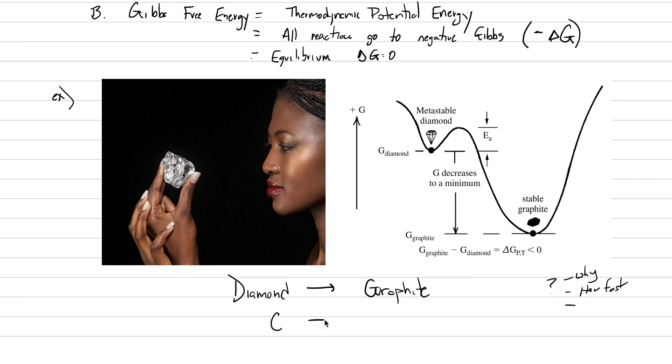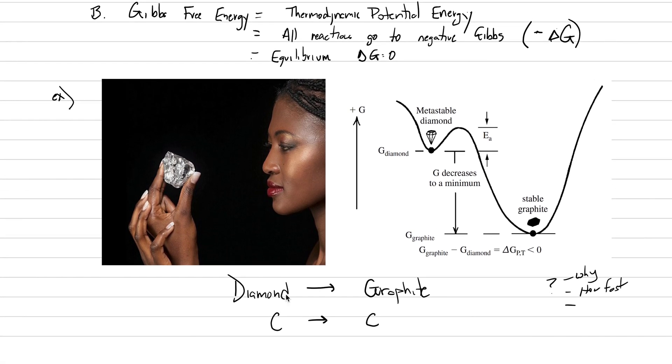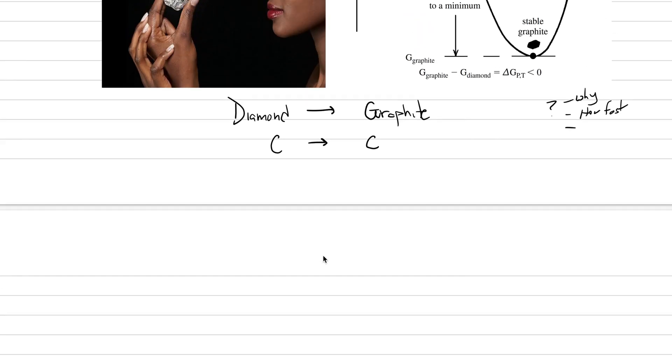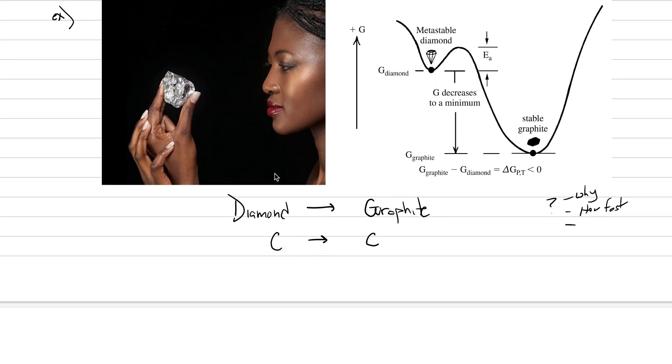Chemically, this reaction is very simple. It's carbon that goes to carbon where we have a type of packing of the carbon atoms. It's very dense for diamond and a type of packing that's less dense for graphite. And the question is, should diamond even exist at the Earth's surface? And the answer is no.